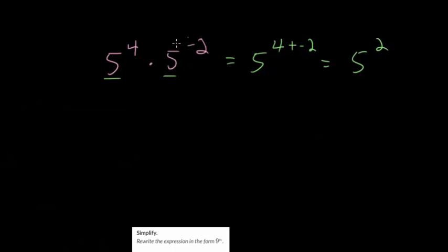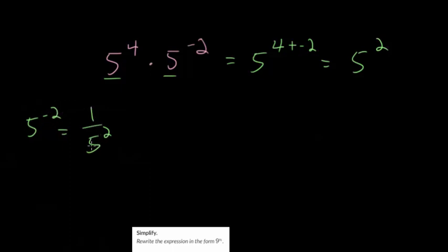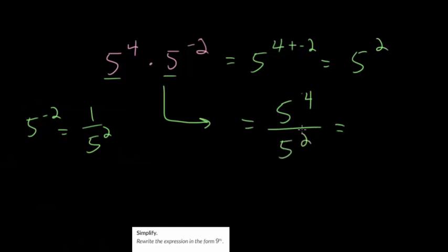So what does it mean to have a negative exponent? Essentially, 5 to the minus 2 would just be 1 over 5 squared. The way I think about this is that when it's a positive exponent, it's repeated multiplication. When it's a negative exponent, it's repeated division — so it's like we're dividing by 5 twice. We could rewrite this as 5 to the 4th divided by 5 squared. When you're using division, you subtract the exponents, and that's how you get 5 squared — you do 4 minus 2.